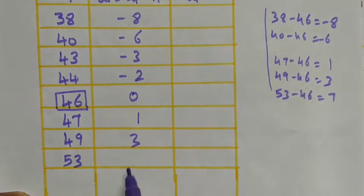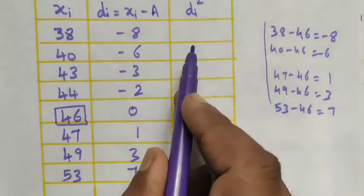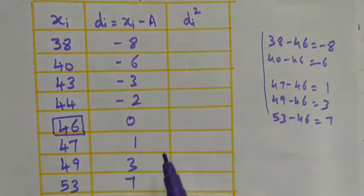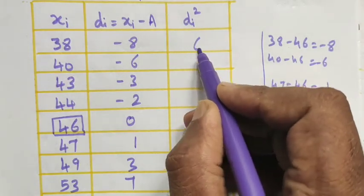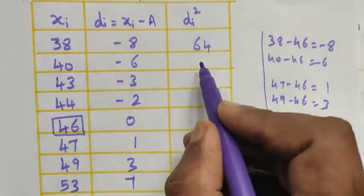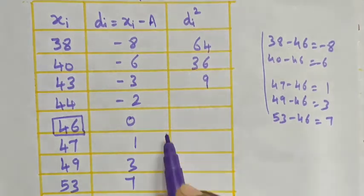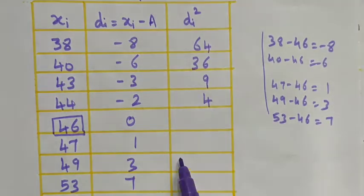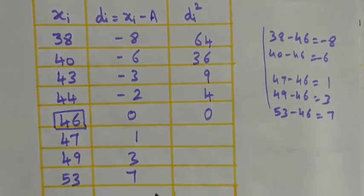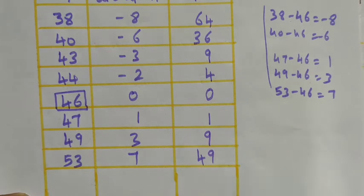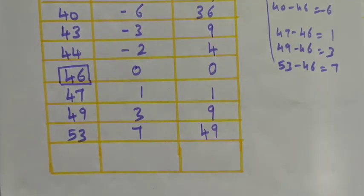Now we find di squared. When we square each deviation we get only positive values: (−8)²=64, (−6)²=36, (−3)²=9, (−2)²=4, 0²=0, 1²=1, 3²=9, 7²=49.